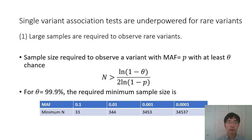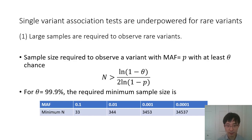One issue of rare variants is that single-variant association tests are underpowered for rare variants. Large samples are usually required to observe rare variants. For example, if we are interested in a variant with minor allele frequency p, and if we want to observe it with at least a theta chance, the sample size required can be calculated based on this formula. For example, if theta equals 99.9%, and the minor allele frequency is 0.0001, the minimum sample size is more than 34,000 individuals.